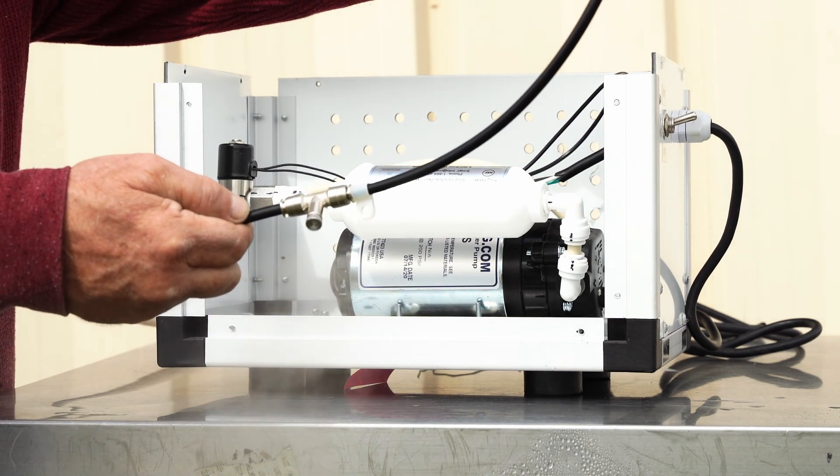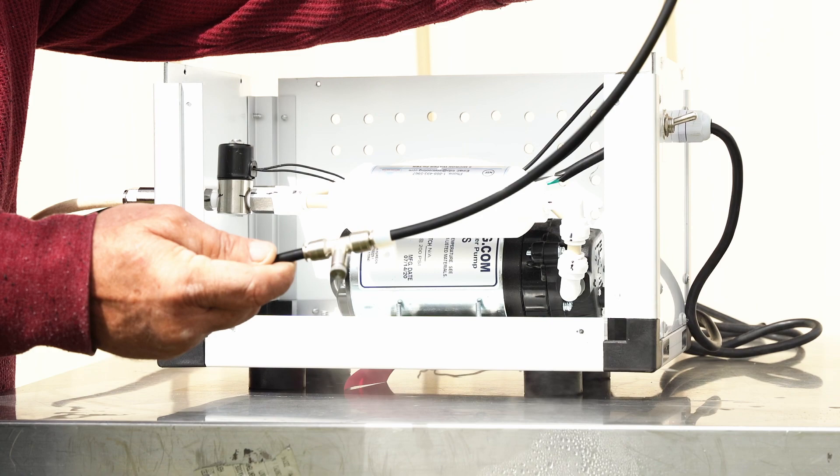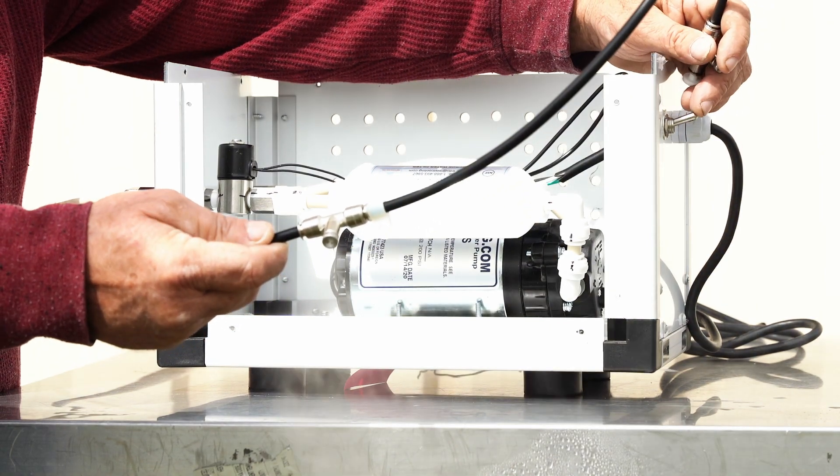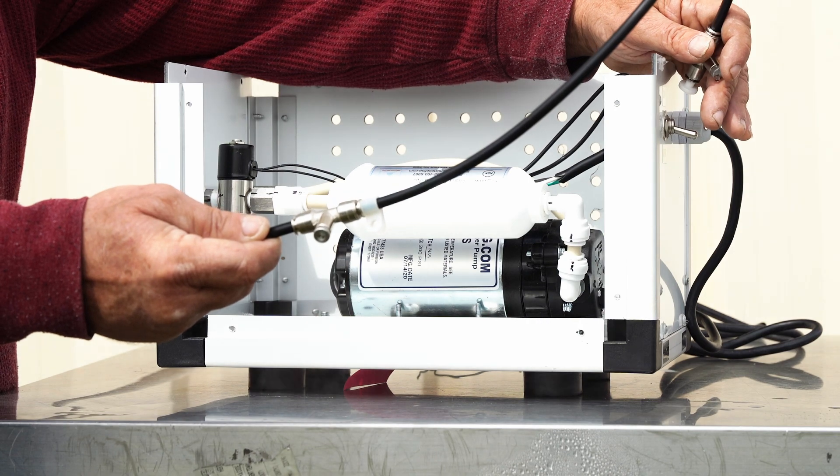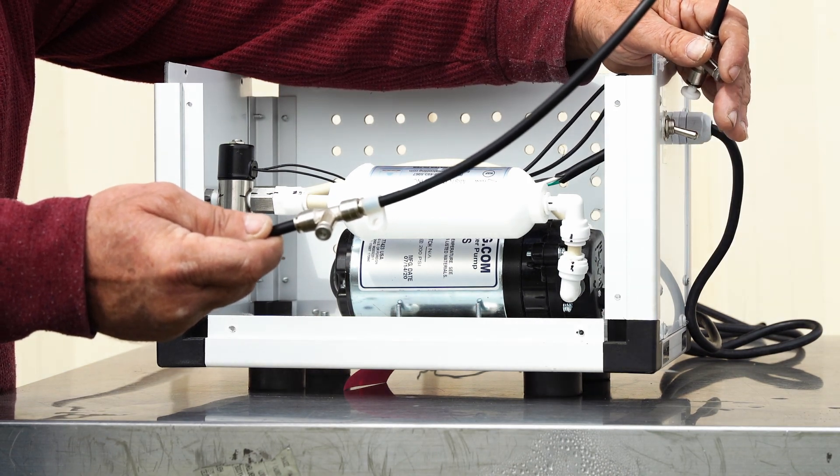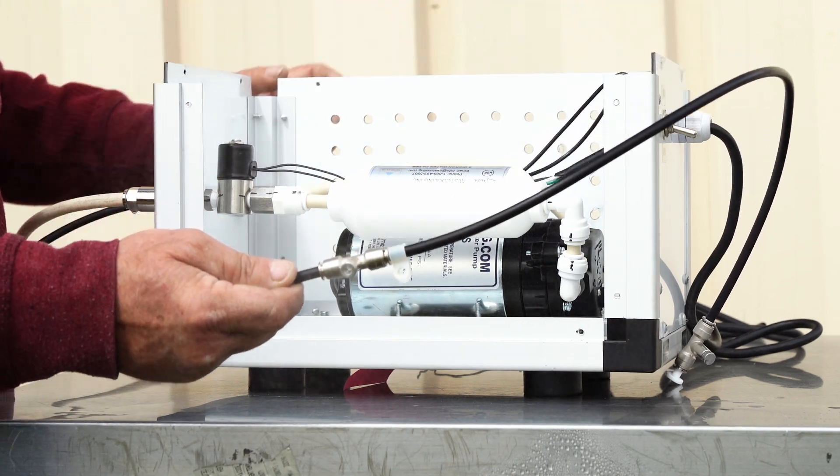When you're done with the system, just simply turn the toggle switch in the down position. It'll turn the pump off. You can leave the water turned on. That's what the solenoid is for. It's to stop the water.